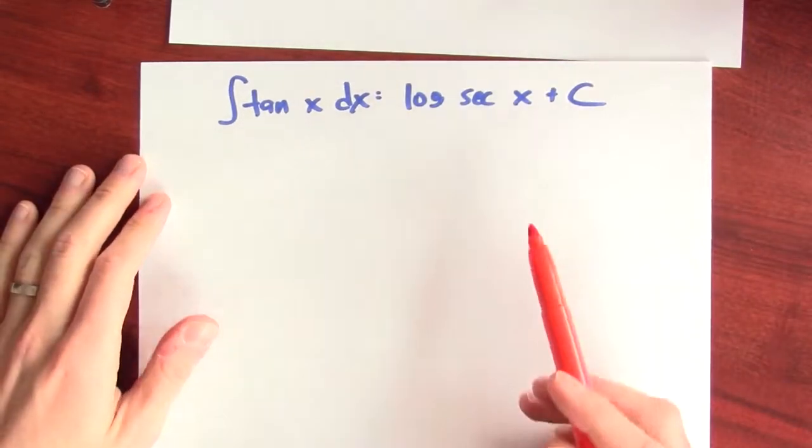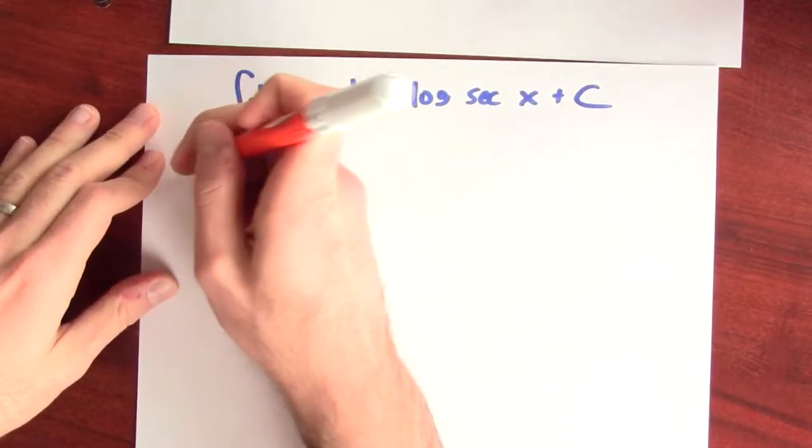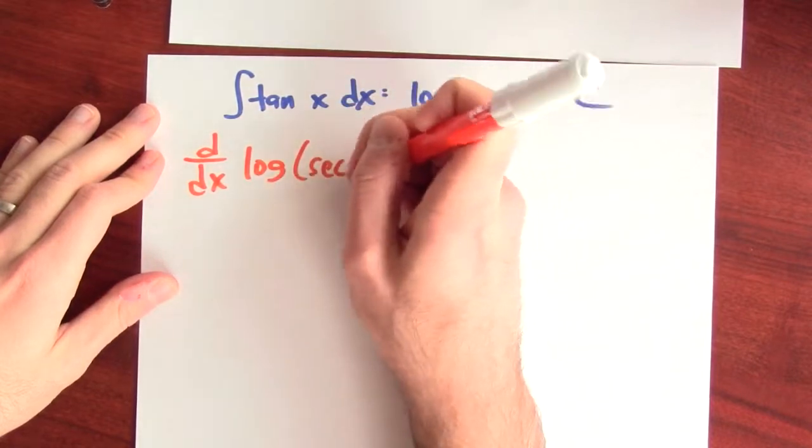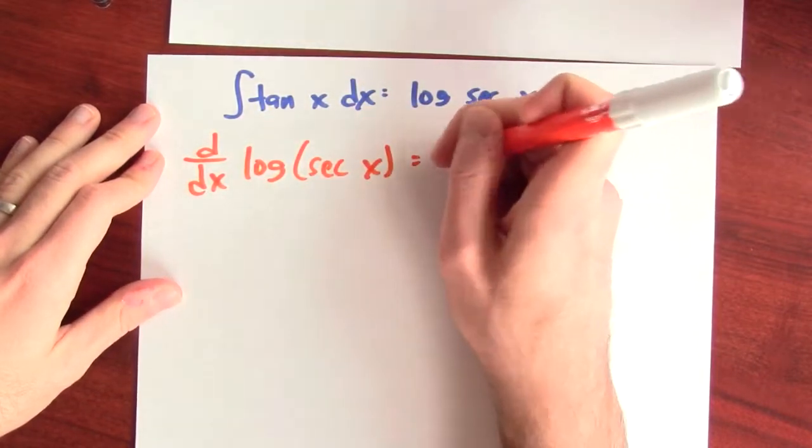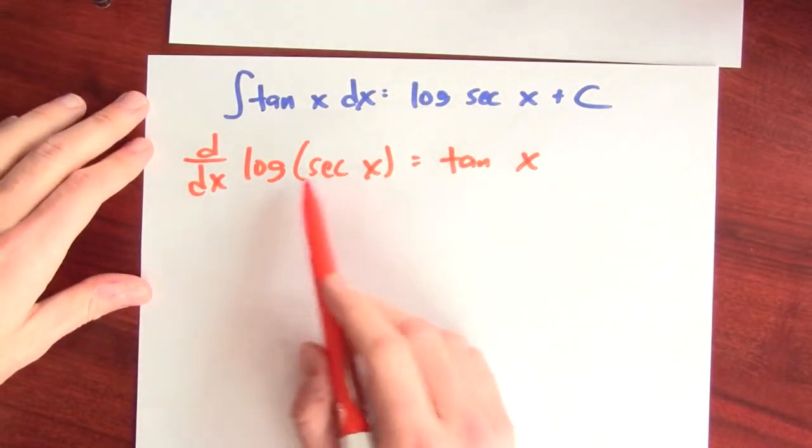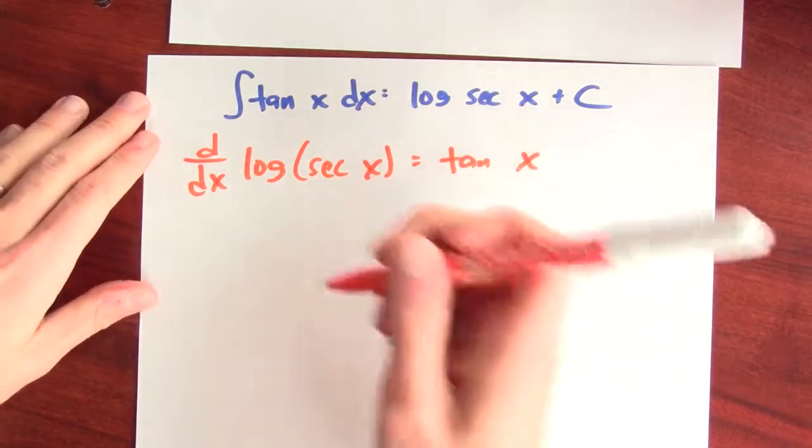How do I know this? To verify this is true, it's enough to do a differentiation problem. I need to check that the derivative of log of secant of x is equal to tangent x. I have to differentiate this composition of functions, the composition of log and secant, which I'll do with the chain rule.